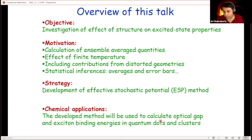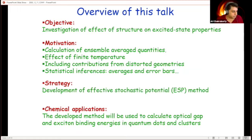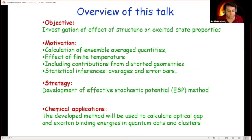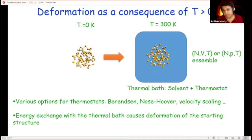The strategy I'm going to present today is called the Effective Stochastic Potential method. I'll spend a little time describing the need for this method and give a brief overview. I won't have time to delve into the theoretical and computational details, but I will give a brief overview and then talk about the chemical application: calculation of optical gaps, exciton binding energies, ionization potentials, and semiconductor quantum dots.